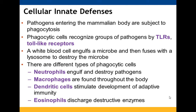When pathogens enter the mammalian body, they get recognized by TLRs — toll-like receptors — which can be on the membrane or inside the cell. There are many types of phagocytic cells: neutrophils, macrophages, dendritic cells, and eosinophils. Dendritic cells will be discussed more with adaptive immunity.